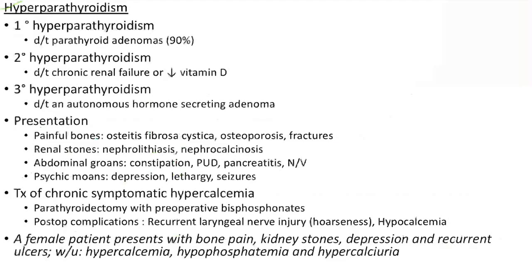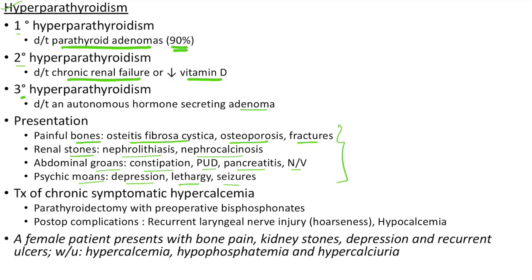Now let us see about hyperparathyroidism. Primary hyperparathyroidism is due to parathyroid adenomas in 90% of cases. Secondary hyperparathyroidism is due to chronic renal failure or decreased vitamin D. Tertiary hyperparathyroidism is due to an autonomous hormone-secreting adenoma. Clinical features can be remembered by the mnemonic bones, stones, groans and moans: painful bones (osteitis fibrosa cystica, osteoporosis, fractures), renal stones (nephrolithiasis and nephrocalcinosis), abdominal groans (constipation, peptic ulcer disease, pancreatitis, nausea and vomiting), and psychiatric moans (depression, lethargy, seizures).